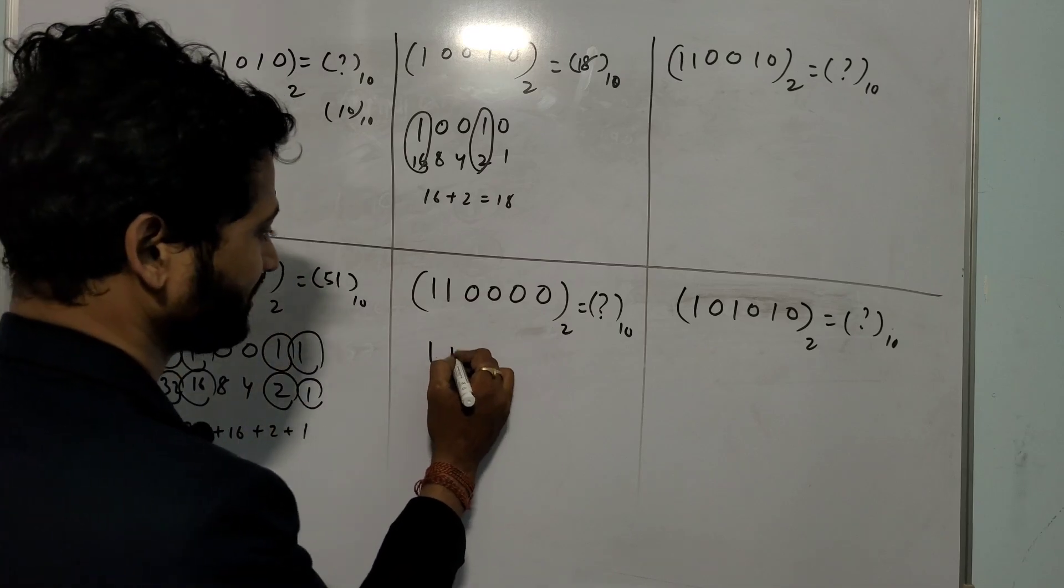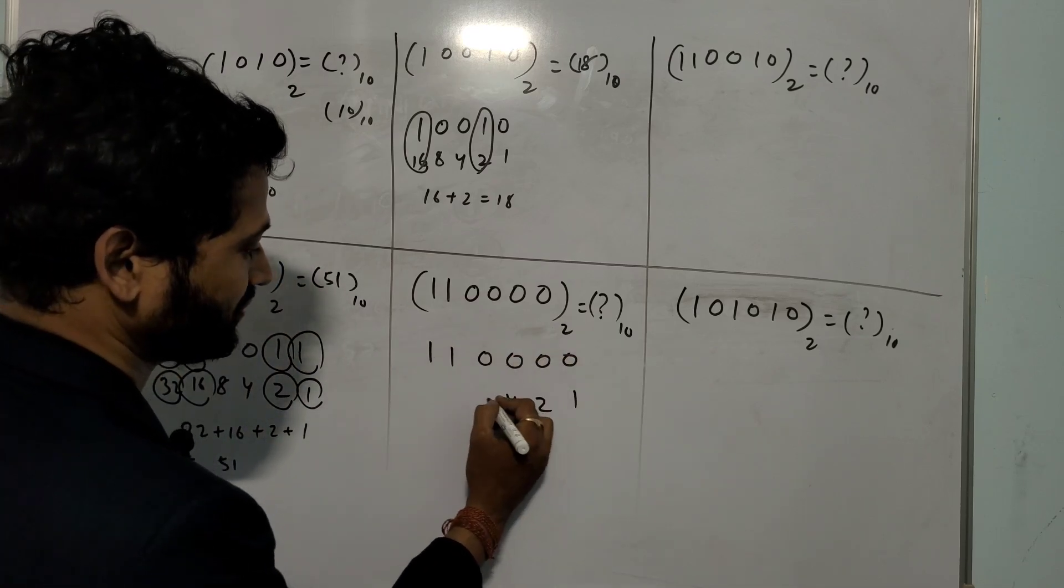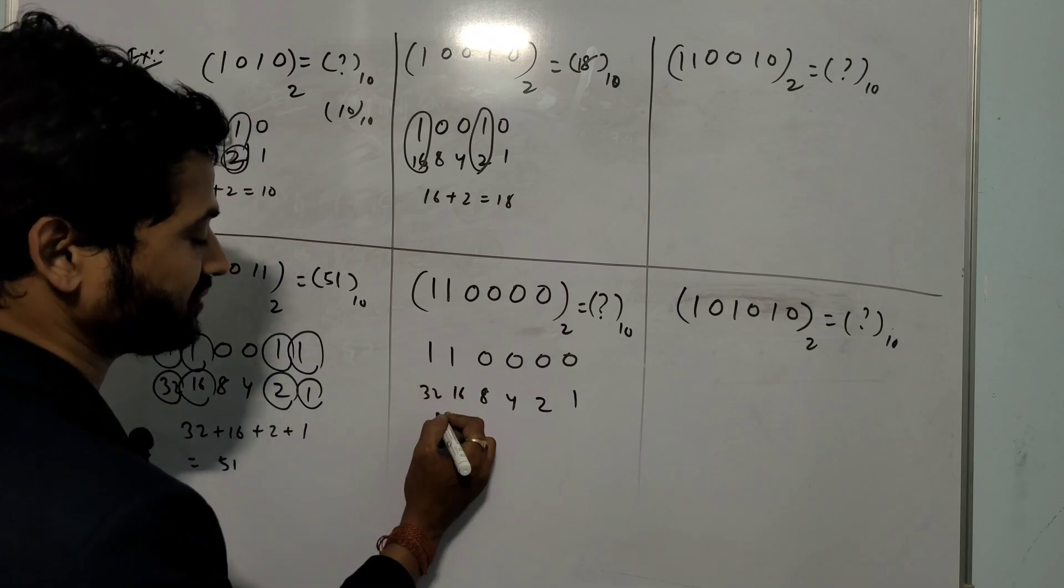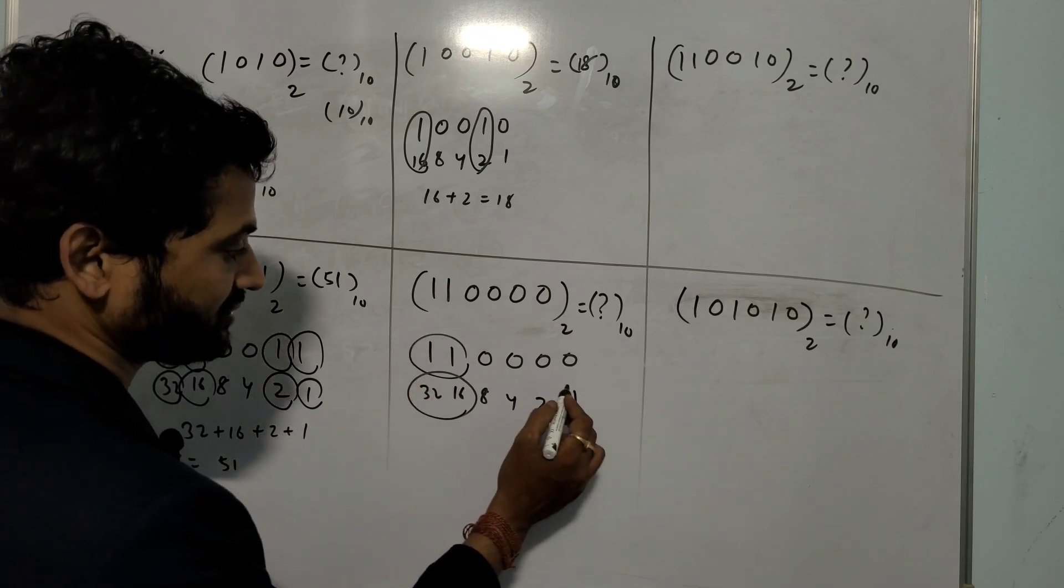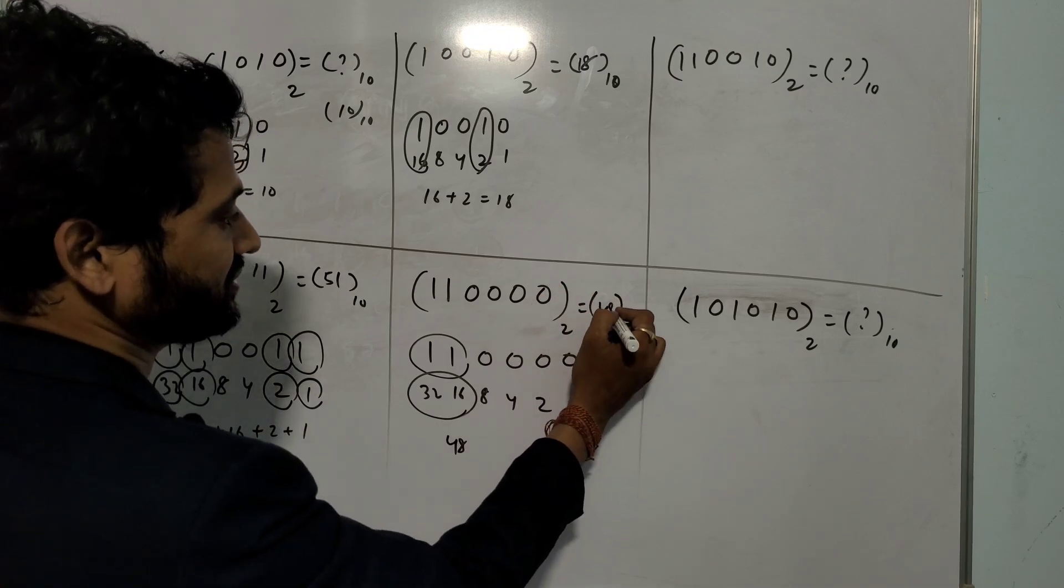You take this one: 110000. 1, 2, 4, 8, 16, and 32. So you take this one and this. 32 plus 16 is 48. So answer is 48.